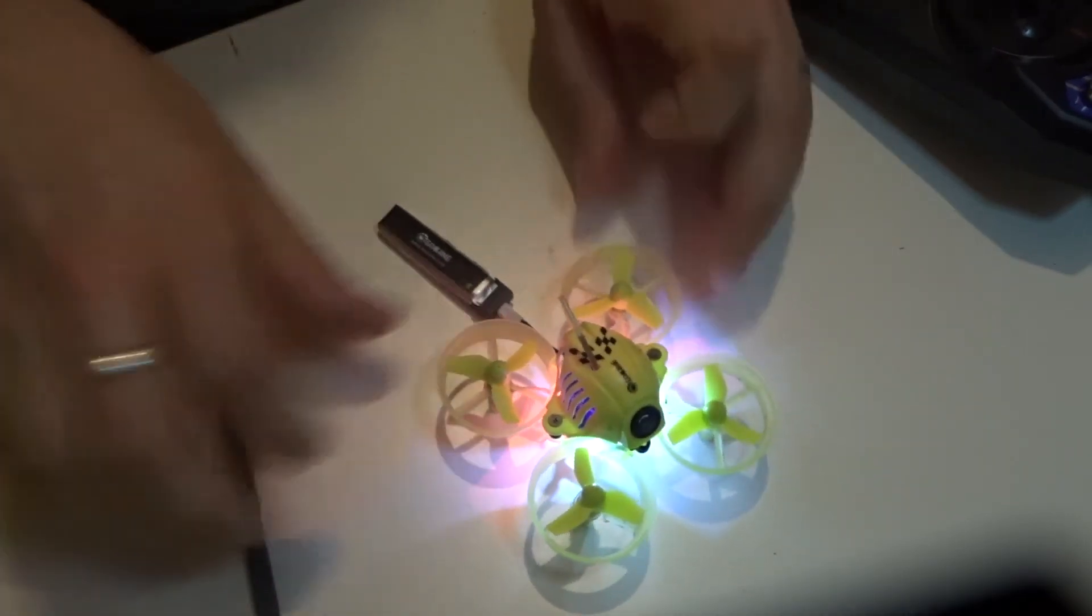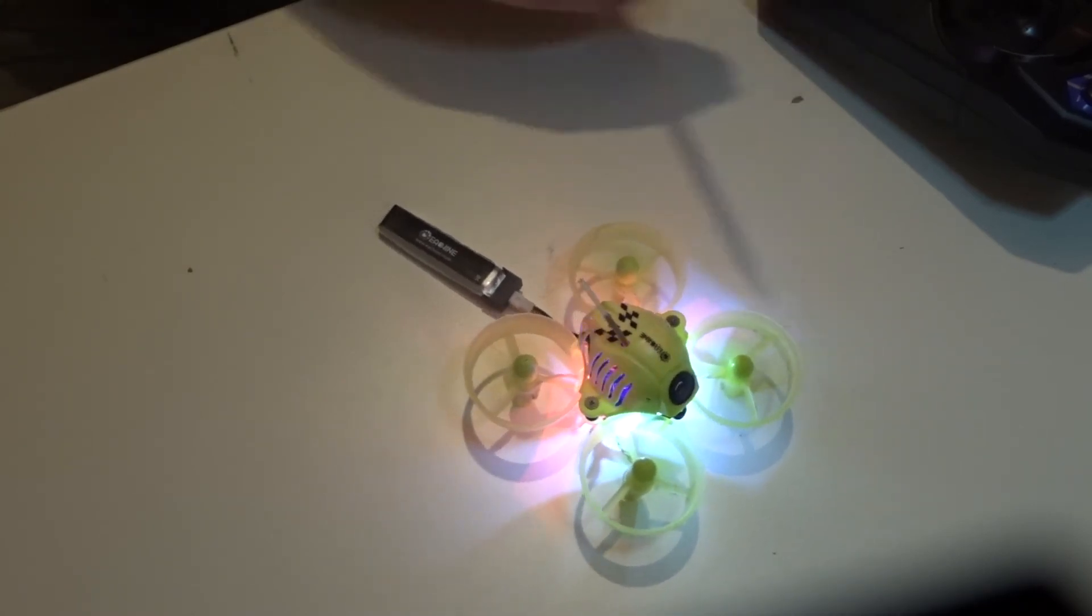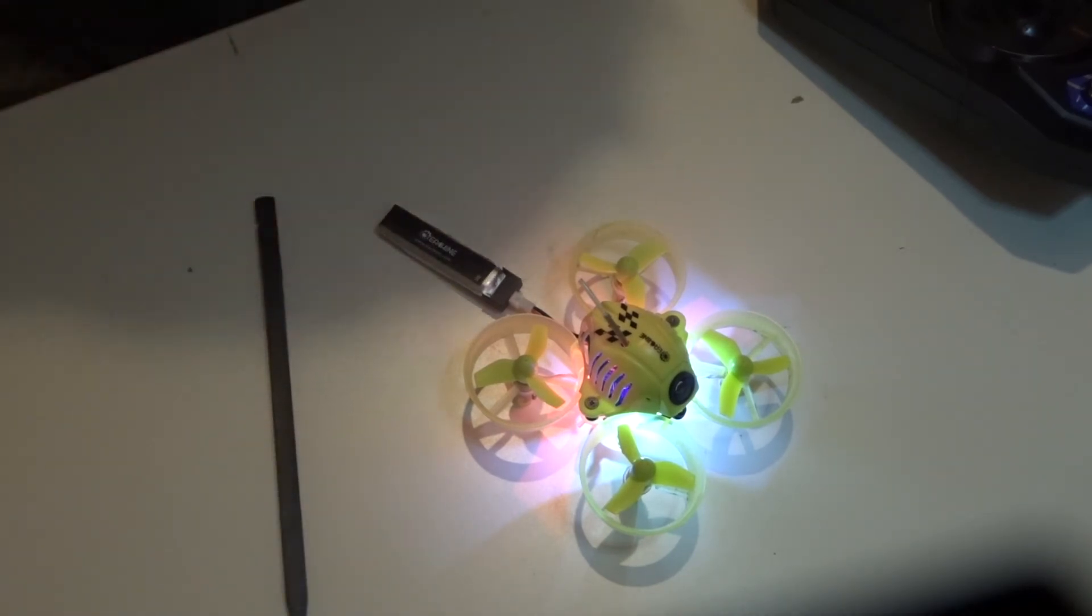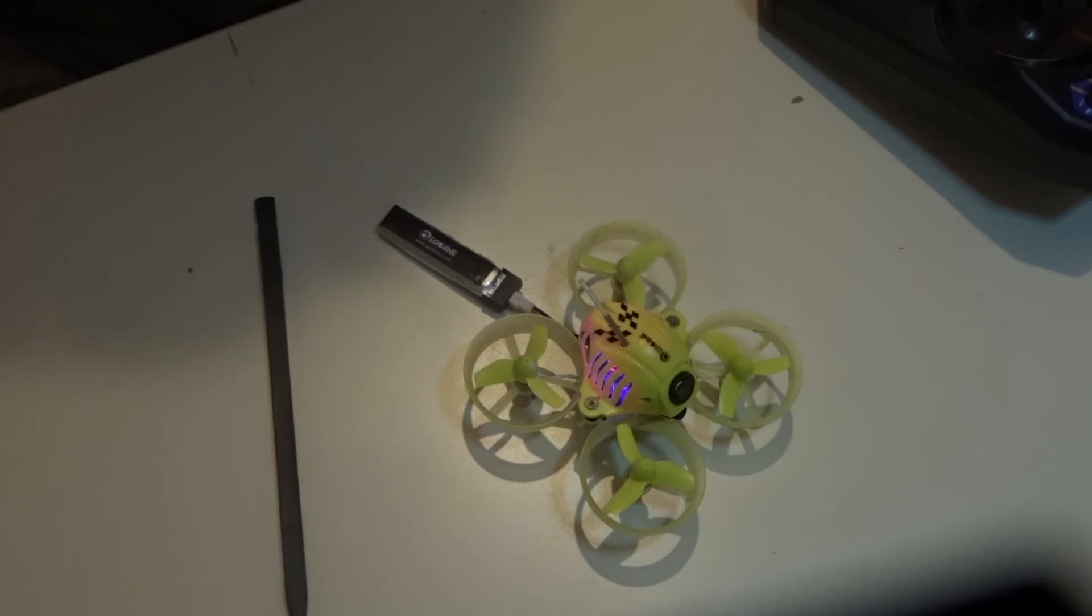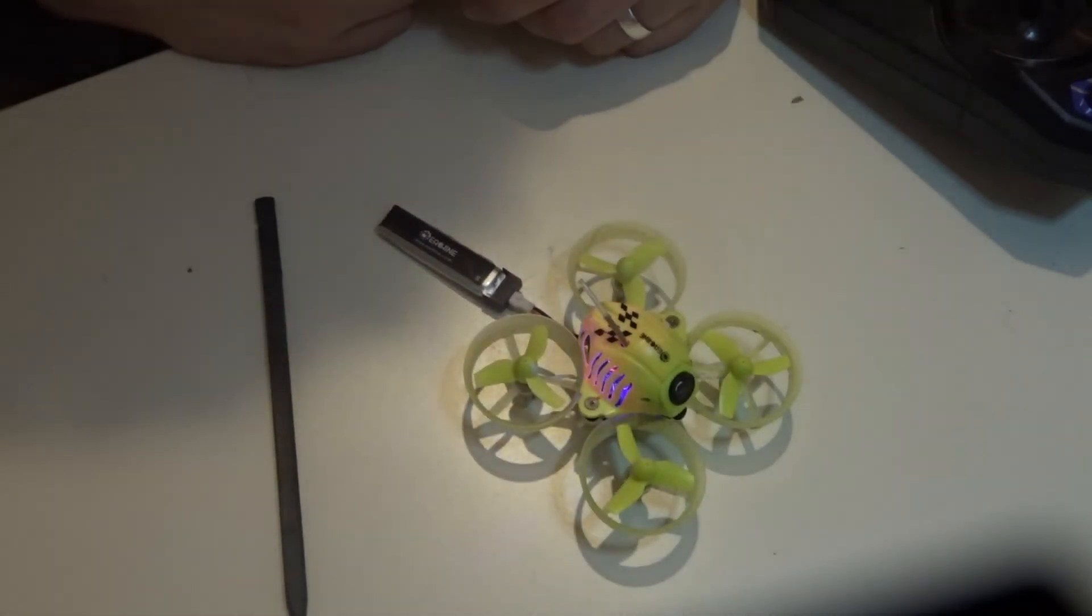So there we go, perfect. So we have all motors are spinning. This is the one here. There we are, motor successfully replaced. There we are folks, that's done. So there we are. I think next thing now is just to take this out, give it a little bit of a flight, see how she does, and then we should be ready to go to carry on our acro diaries.